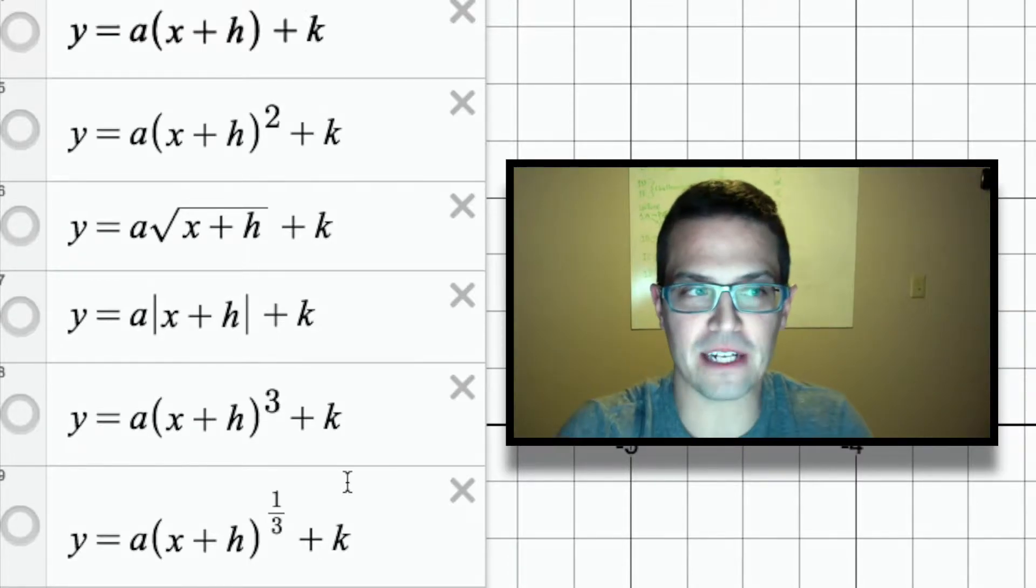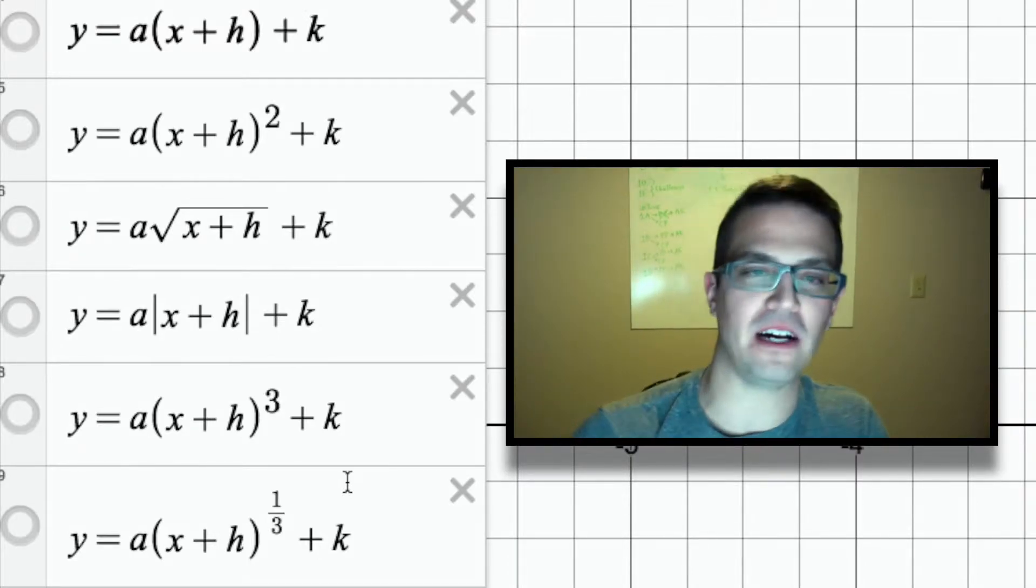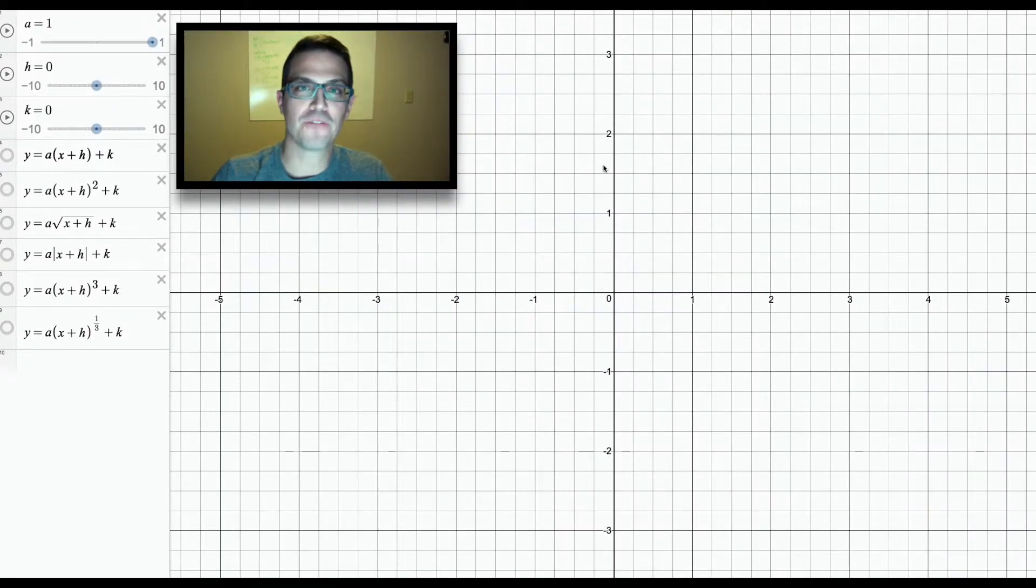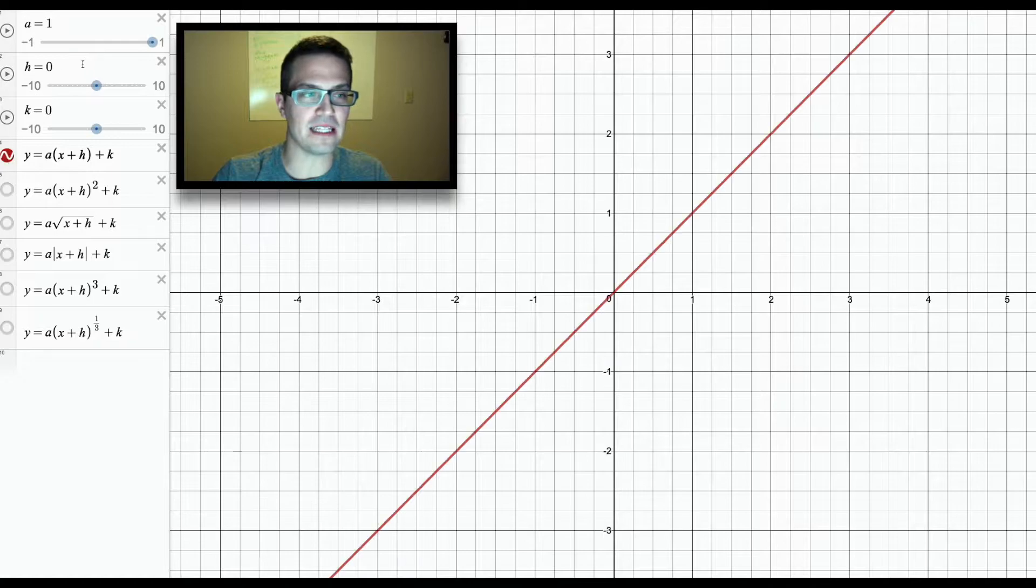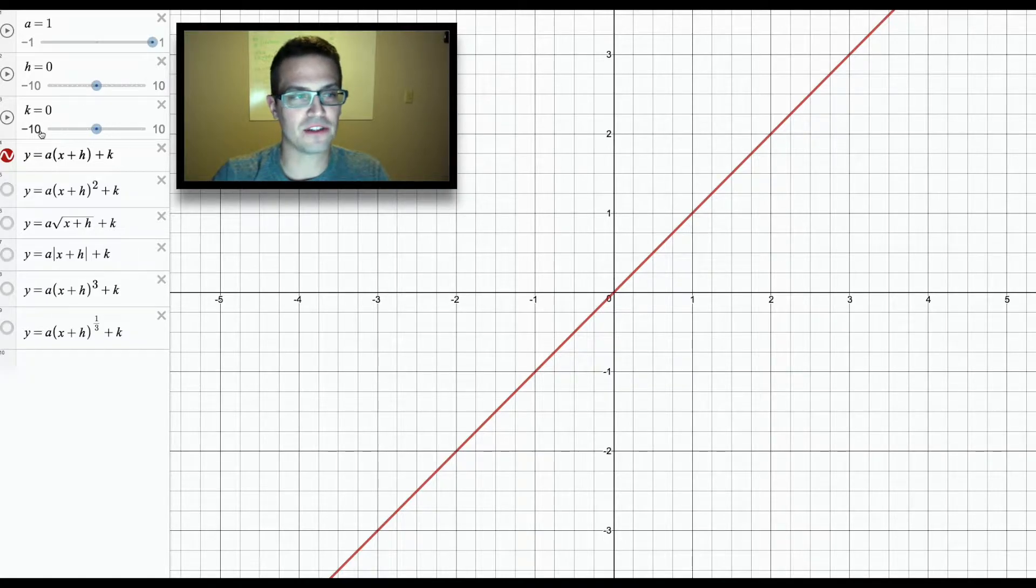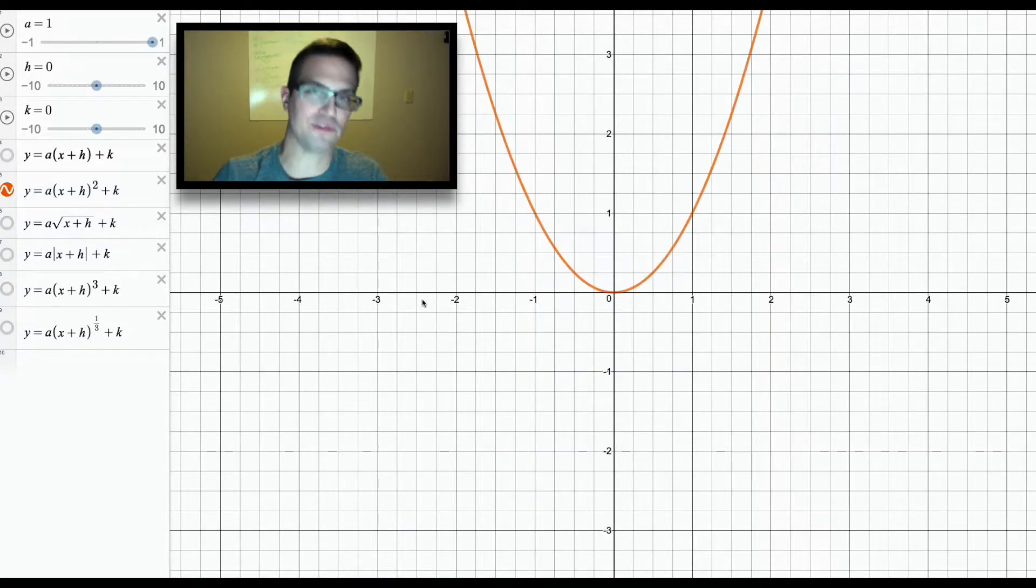To help me with these transformations, I'm going to be using this Desmos file that you see right in front of you here. The first thing I'm going to do is show you what each of these variables, this h, this a, this h, and this k right here, do to these parent functions. Now we could start with a linear function, but it's kind of hard to actually see the transformations that are happening. So I'm actually going to skip this one for now, and I'm going to focus on the quadratic one.